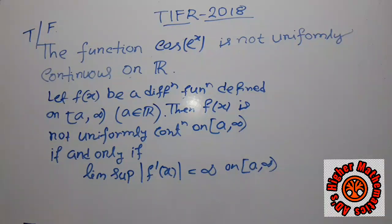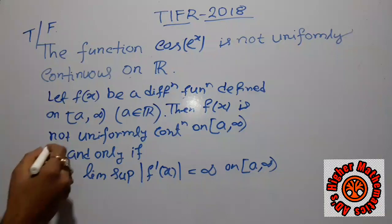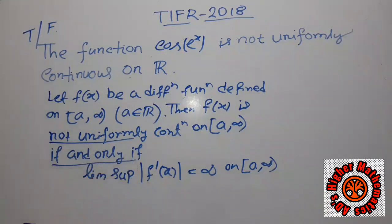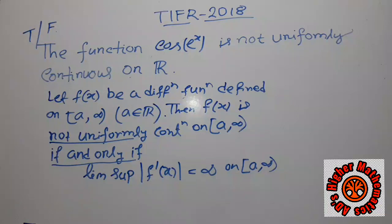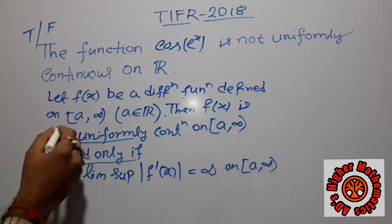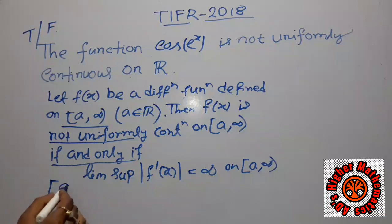I take this lemma because there are two important words: 'not uniformly continuous' and 'if and only if.' If we have to show any function is not uniformly continuous, this condition holds, and if this condition holds we can conclude the function is not uniformly continuous in that domain. This lemma is very useful for any domain of the form [a, ∞).